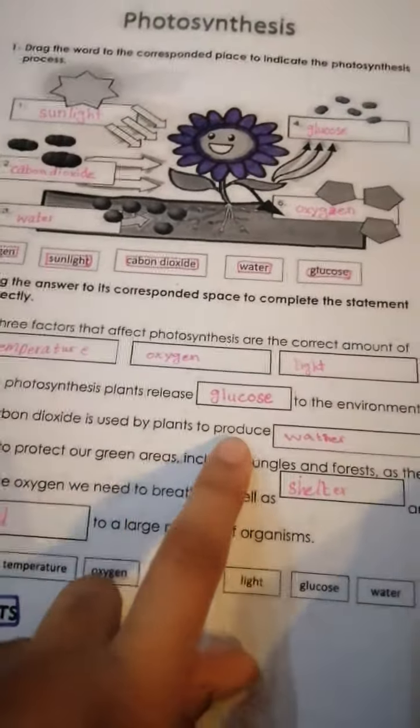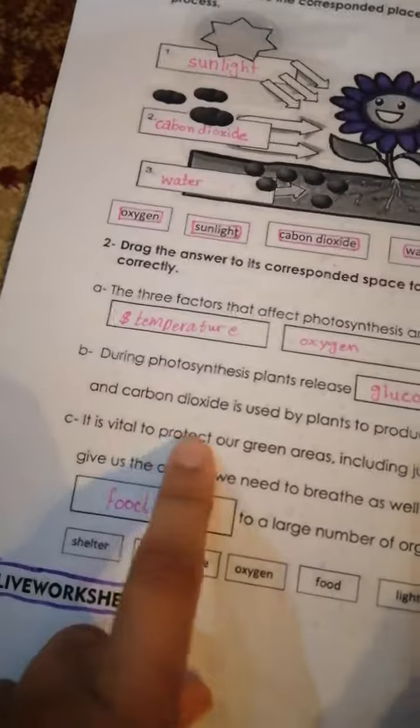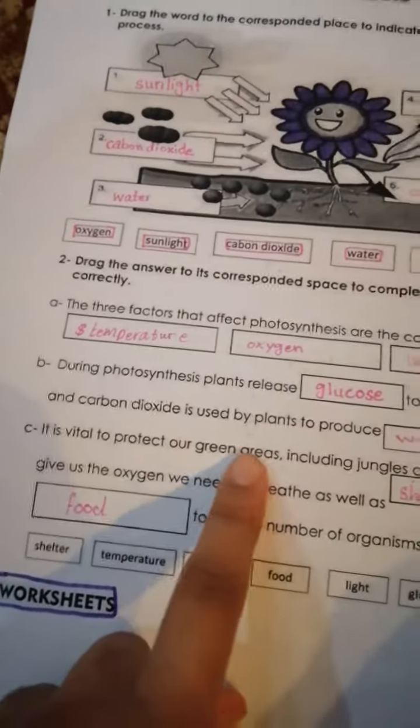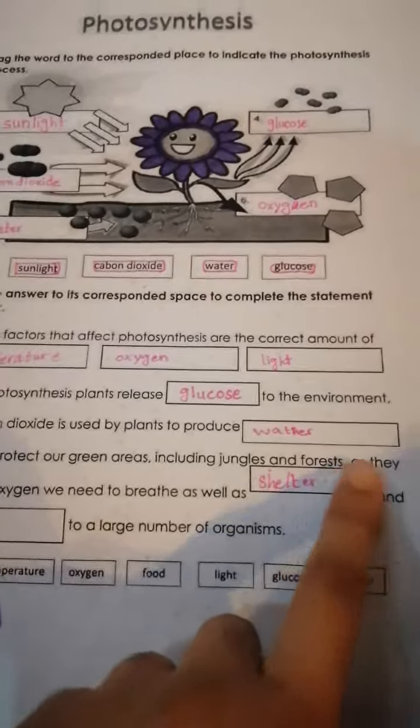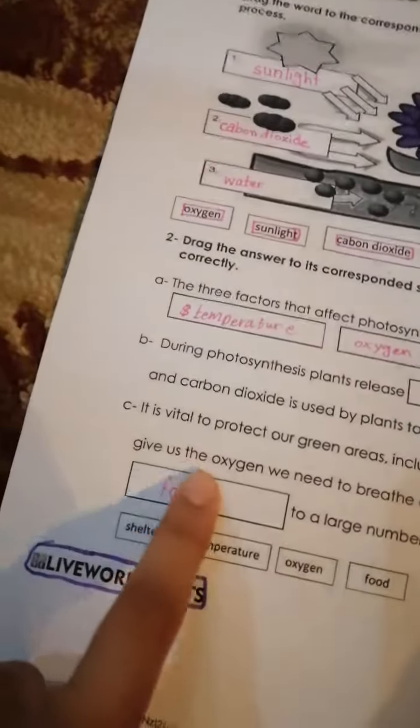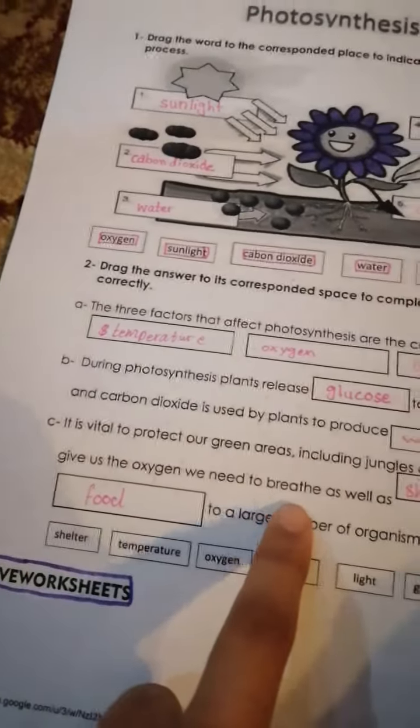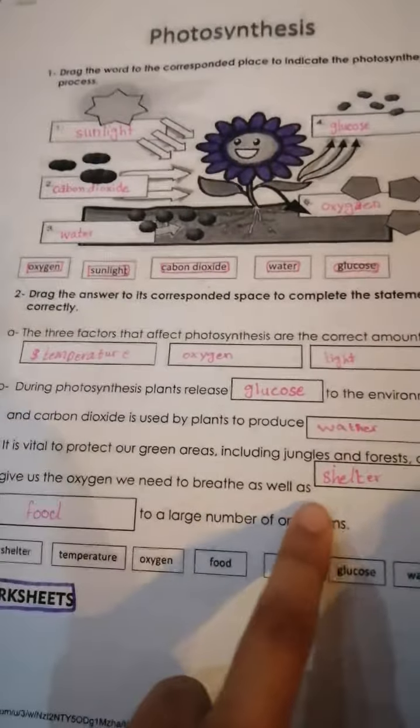That's all for parts B and C. It is important to protect green areas including jungles and forests, as they give us oxygen that we need to breathe, as well as shelter and food to a large number of organisms.